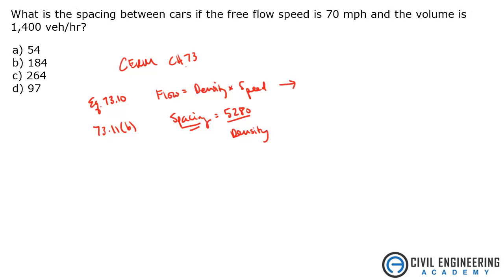Density is going to equal flow over speed. We were given 1400 vehicles per hour as the flow, or it could be called the volume, and we divide that by 70 miles per hour.